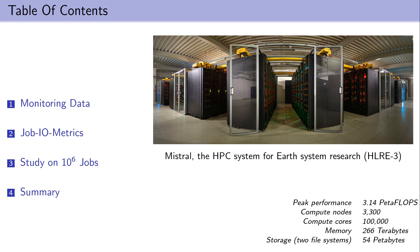By the way, on the right you can see the picture of Mistral and below we can find some key numbers. For example, Mistral has a peak performance of 3.14 petaflops. It has around 3,300 compute nodes, which in turn have around 100,000 compute cores and 266 terabytes of memory. For this presentation it is important to note that Mistral has two file systems, which have a total capacity of 54 petabytes.